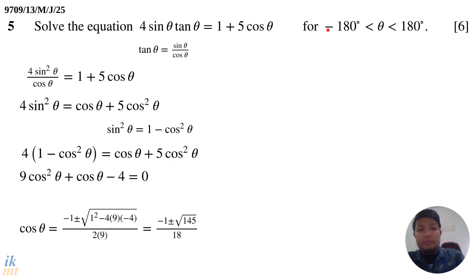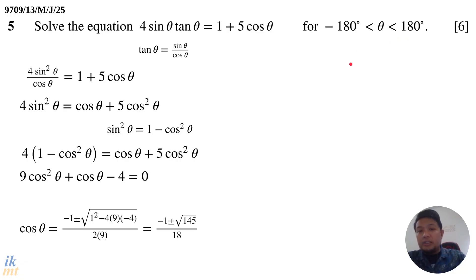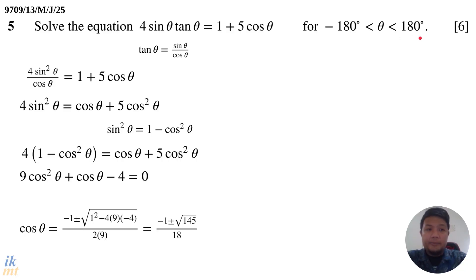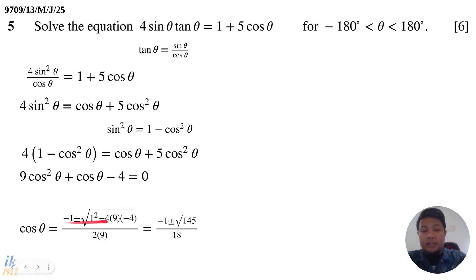Notice that we are going from negative 180 degrees to 180 degrees, and cosine theta is symmetrical within this domain. The cosine inverse function on your calculator will give any answer between 0 and 180 degrees. So whatever positive result you get from the calculator, due to the symmetry of the cosine function between negative 180 and 180 degrees, you must also include the negative angle of that answer.